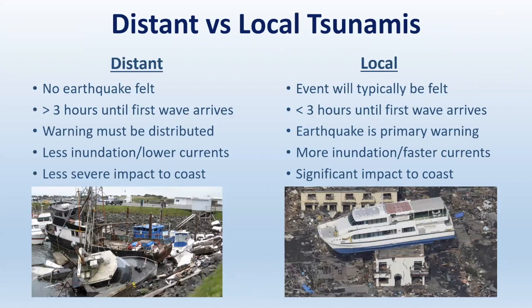It's important to understand the difference between distant and local tsunamis. For a distant tsunami, you're not going to feel the earthquake, and the first waves will arrive in greater than three hours. Your warning must be distributed through an alert process or natural signs. There will be less inundation, less drastic currents, and less severe impacts. For a local event, typically felt through an earthquake, the shaking is your warning. Wave arrival times will be less than three hours. There will be more inundation, potentially higher waves, faster and more dangerous currents, and significantly higher impacts along the coastline and to maritime infrastructure.